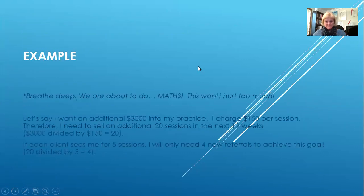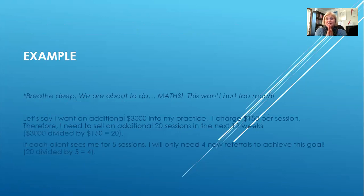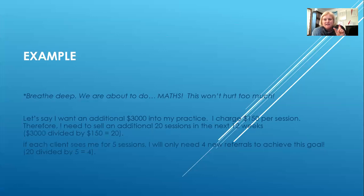Breathe deeply, because we're about to do maths, and I know for a lot of us in human services, we don't enjoy maths. But there are a lot of people watching this who will be excited about doing the math because it feels so concrete. So let's say I want an additional $3,000 in my practice and I charge $150 per session. Therefore, I will need to sell an additional 20 sessions in the next 12 weeks. How did I work that out? I divided $3,000 by $150, which told me I needed 20 sessions.